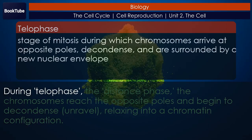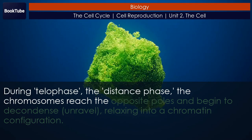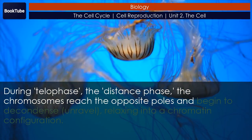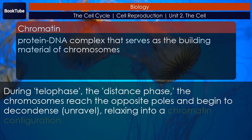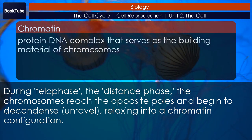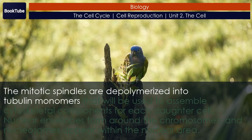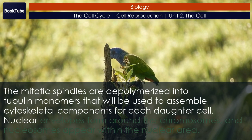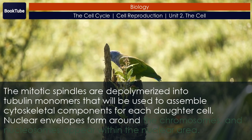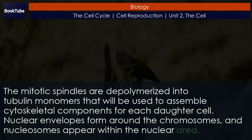During telophase, the chromosomes reach the opposite poles and begin to decondense, unravel, relaxing into a chromatin configuration. The mitotic spindles are depolymerized into tubulin monomers that will be used to assemble cytoskeletal components for each daughter cell. Nuclear envelopes form around the chromosomes, and nucleosomes appear within the nuclear area.